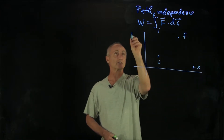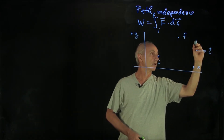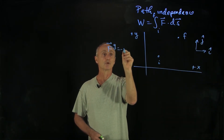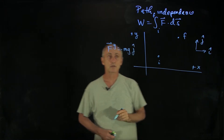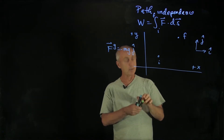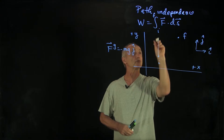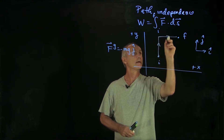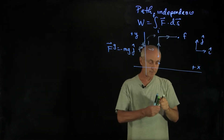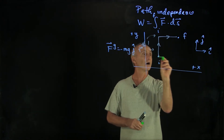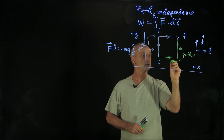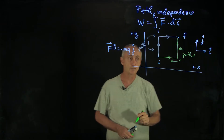Let's choose plus x and plus y with unit vectors i-hat and j-hat. In this example, we're going to consider the gravitational force near the surface of the Earth, which is constant pointing downwards. I'd like to consider two paths. The first path goes straight up and over — that's path one, and it has two legs. The second path, path two, will go horizontal and vertical, giving it two different legs. We'd like to evaluate this integral on both paths.